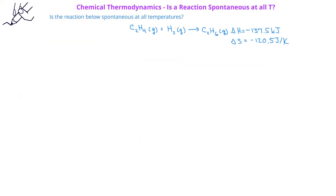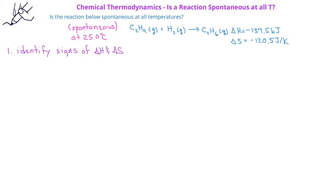We saw that this reaction is spontaneous at 25.0 degrees Celsius, but is it spontaneous at all temperatures? Using the signs of the enthalpy and entropy changes in ΔG = ΔH − TΔS: ΔH is negative and ΔS is also negative, so the −TΔS term will be positive. We therefore have a negative ΔH term and a positive TΔS term.